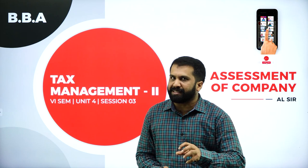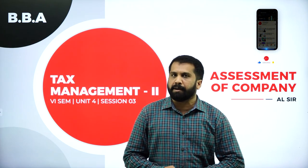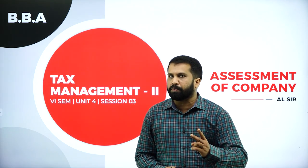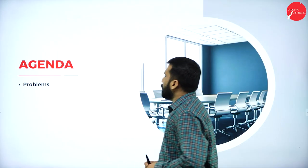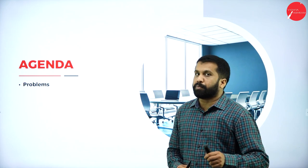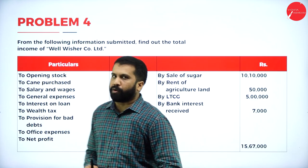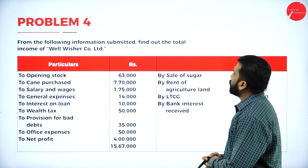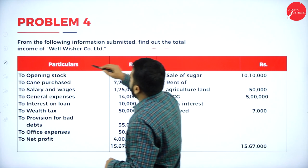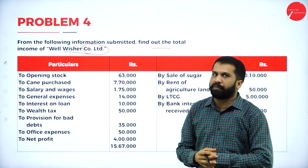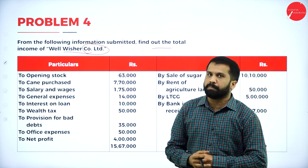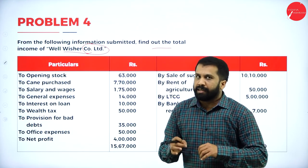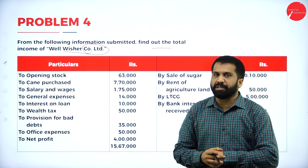In the previous session, we also found out what is the business income as a company's income. At the end, we also calculated the total income of all five heads. Similarly, today we will do two more problems under assessment of companies. Your agenda is very simple — we are working problems. We are done with three problems, now we are into problem number four.